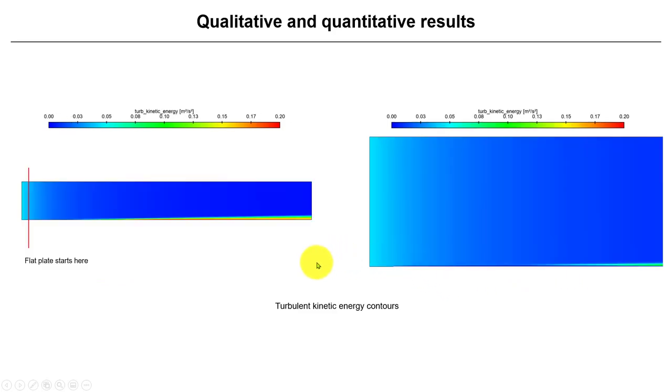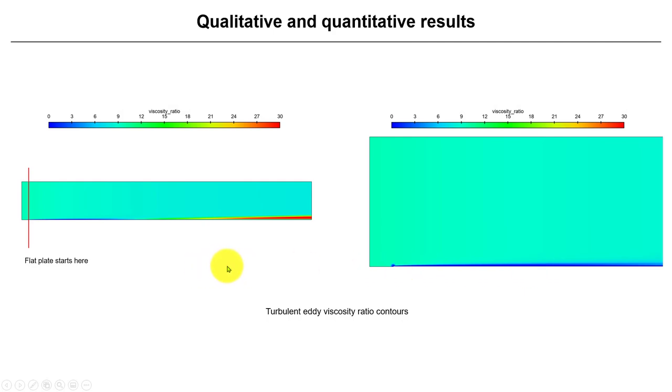We have pressure contours and velocity magnitude contours—nothing much to see here. But now let's take a look at the turbulent kinetic energy. See that here you see all these regions where we don't see any turbulent kinetic energy, and then here you have the development. This is a clear indication, the fingerprint of transition to turbulence.